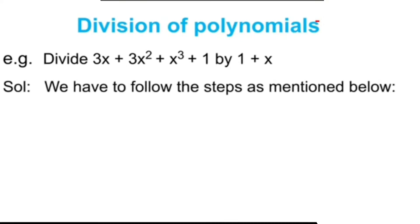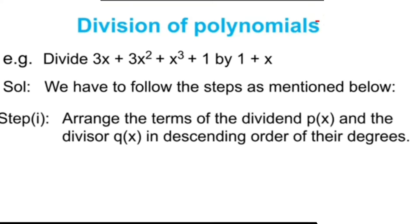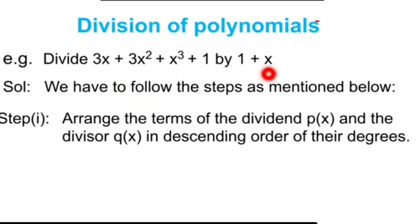We have to follow the steps as mentioned below. Step 1: arrange the terms of the dividend P(x) and the divisor Q(x) in descending order of their degrees. We need to arrange the terms of the dividend and the divisor in descending order as per the degrees. Children, are the terms of the dividend and divisor in descending order? No. So let us arrange.